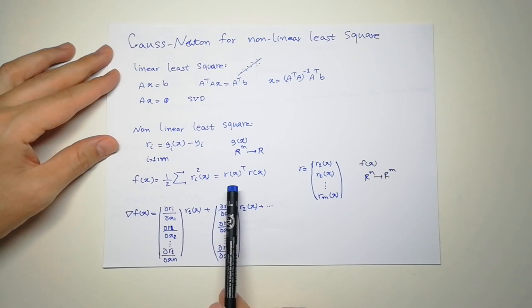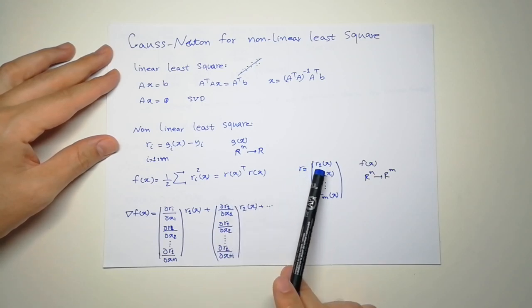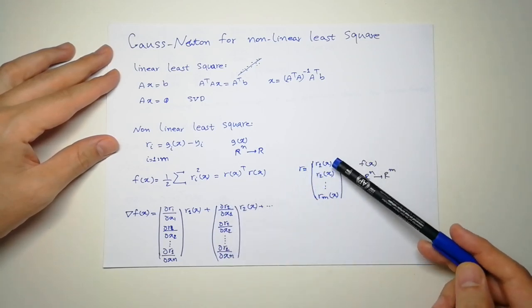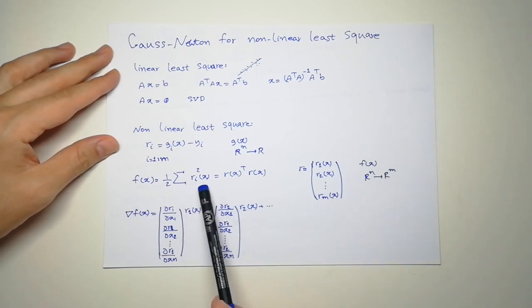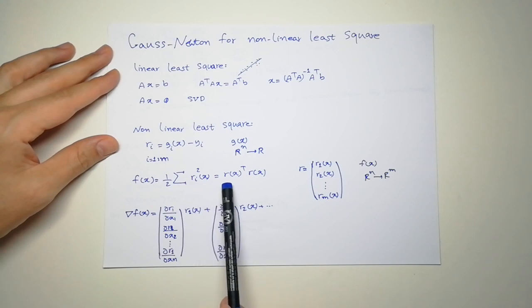We can also write R as a vector of all these functions, and obviously you can see that this is just the product of this vector transpose multiplied by itself.